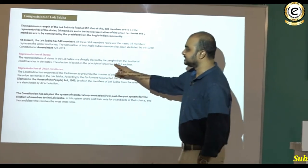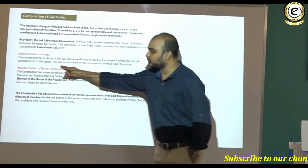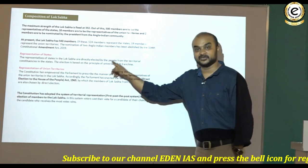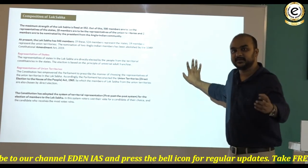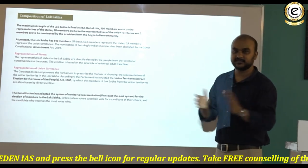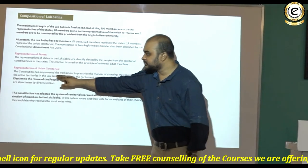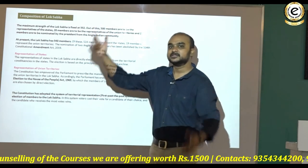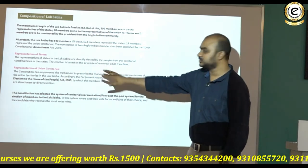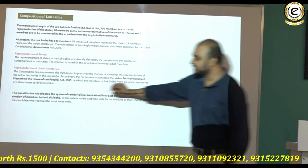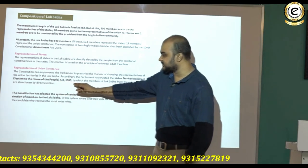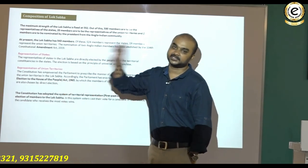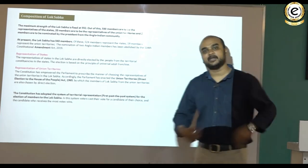The representatives of states in the Lok Sabha are directly elected by the people from territorial constituencies, based on the principle of universal adult franchise — a key feature of the Indian constitution, connected to the 61st constitutional amendment reducing the voting age. For union territories, the constitution empowers parliament to prescribe the manner of choosing representatives. Accordingly, parliament enacted the Union Territories Direct Election to the House of the People Act, 1965, by which Lok Sabha members from union territories are also chosen by direct election. As far as Lok Sabha is concerned, everything is direct election, and the element of nomination has been abolished.